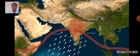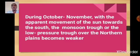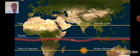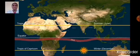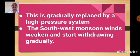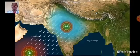ITCZ stands for Inter-Tropical Convergence Zone. During October-November, with the apparent movement of the sun towards the south, the monsoon trough or the low-pressure trough over the northern plains becomes weaker. This is gradually replaced by a high-pressure system.